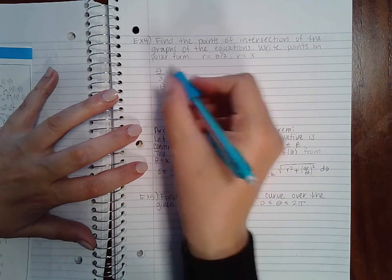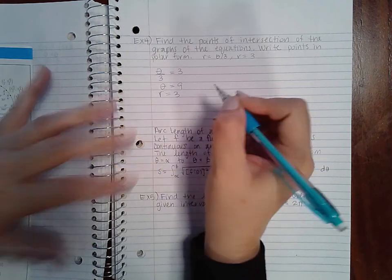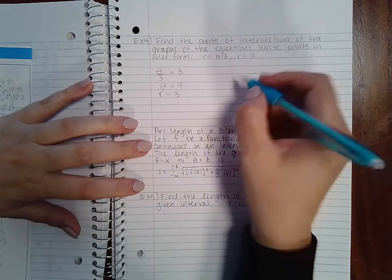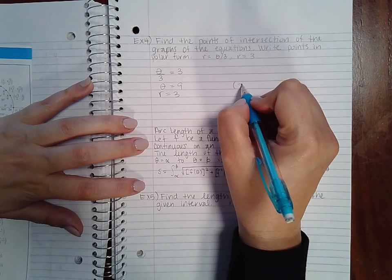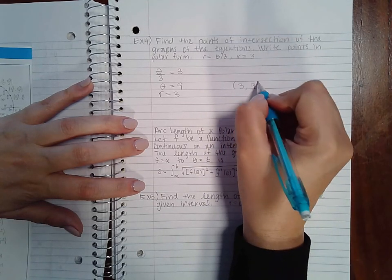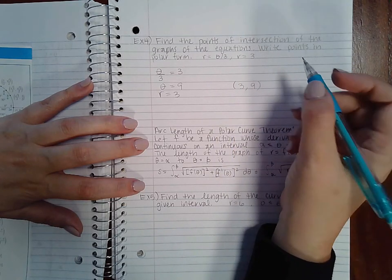And since you already know that R is equal to three, then you have your two values there. You have three and nine, and then you also have...